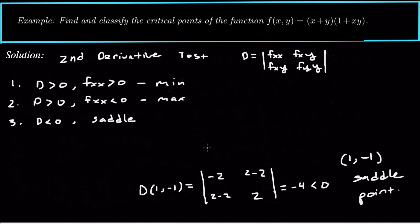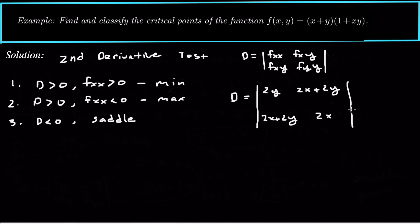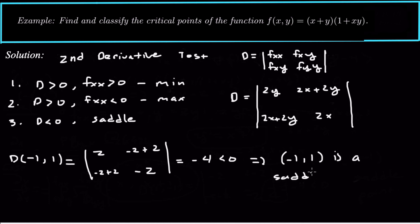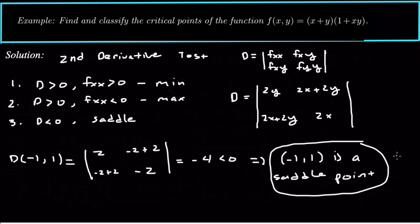Now let's check d of negative 1, 1. Plugging in x equals negative 1 and y equals positive 1: f xx is 2, f xy is negative 2 plus 2 which equals 0, and f yy is negative 2. So this discriminant also equals negative 4, which is less than zero. That tells us negative 1, 1 is also a saddle point. So they're actually both saddle points in this example.